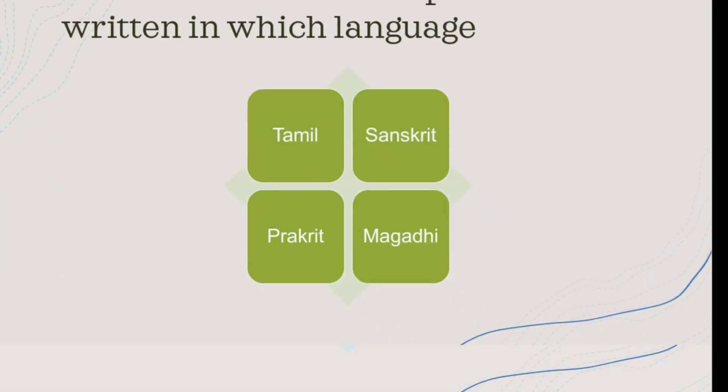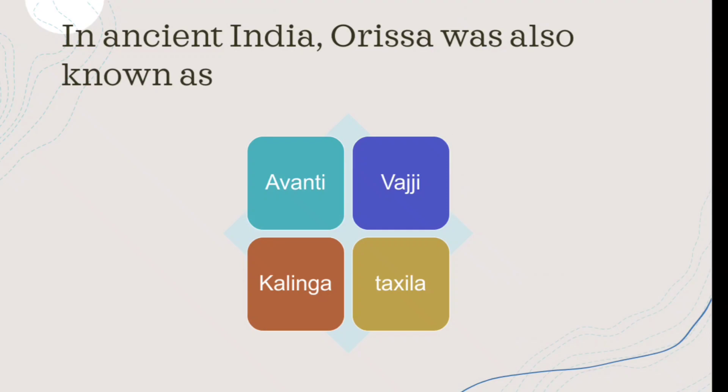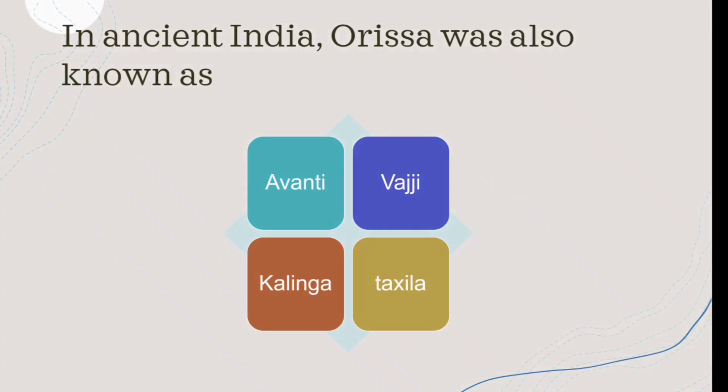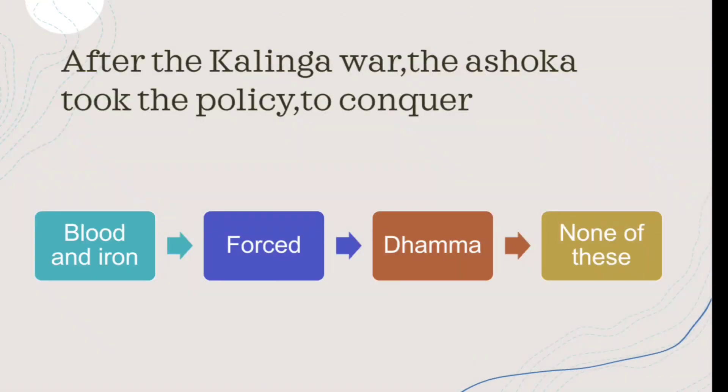In ancient India, Odisha was also known as what? The right answer is Kalinga. What we call Odisha today was known as Kalinga in ancient times.